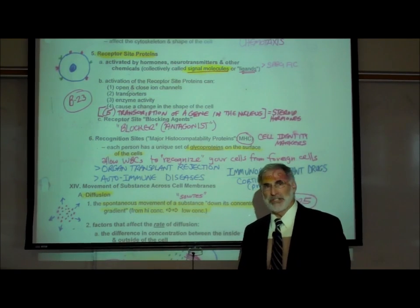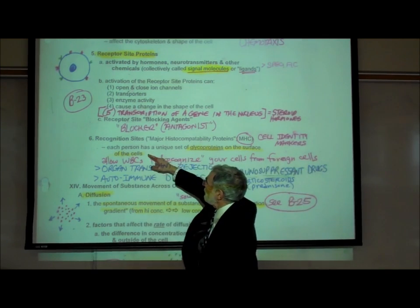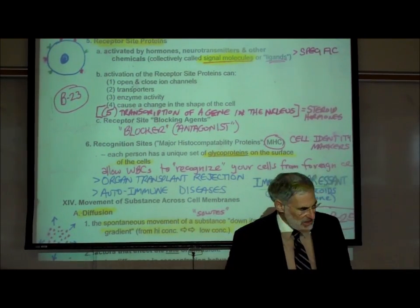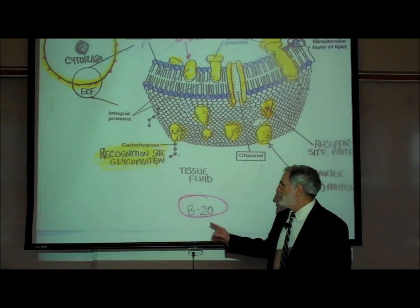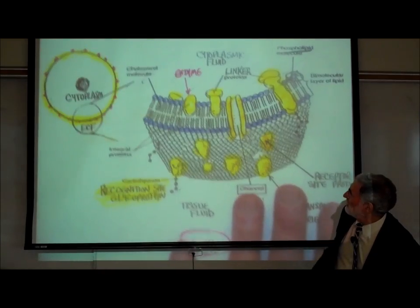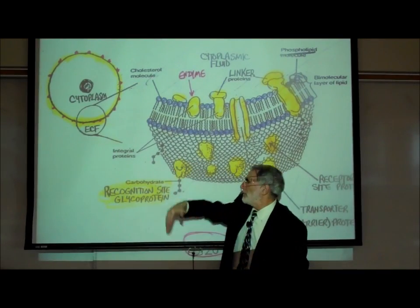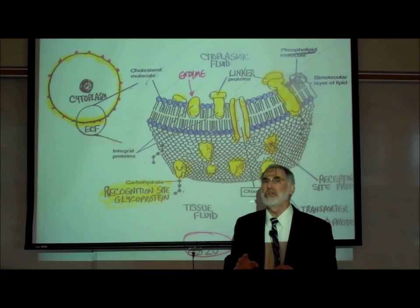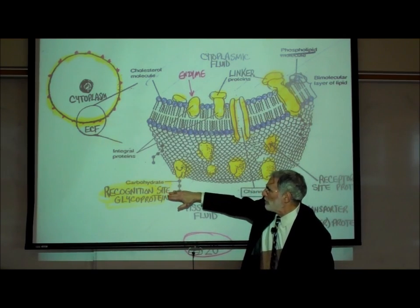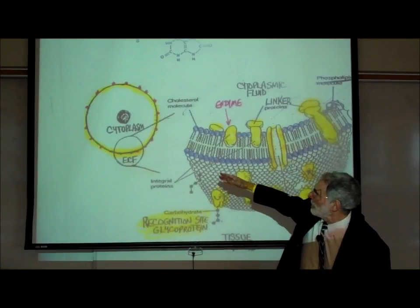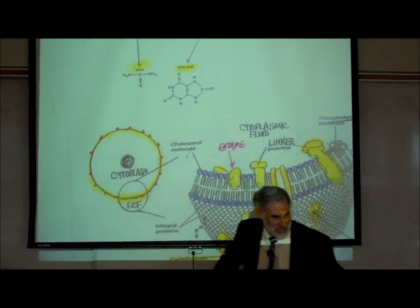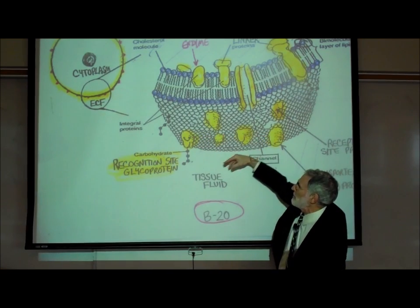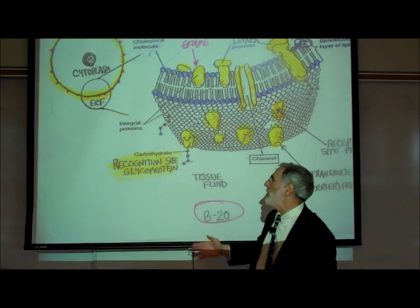We're now going to talk about recognition site glycoproteins, listed on page B23. These are located on the outer surface of the cell membrane. Returning to page B20, we can see our picture of the cell membrane, with structures projecting out on the outer surface. Every cell in a particular person's body has a unique set of glycoprotein recognition sites projecting out on the outer surface of the cell membrane. These are called glycoproteins because the proteins embedded in the cell membrane have sugars or carbohydrates attached to them.